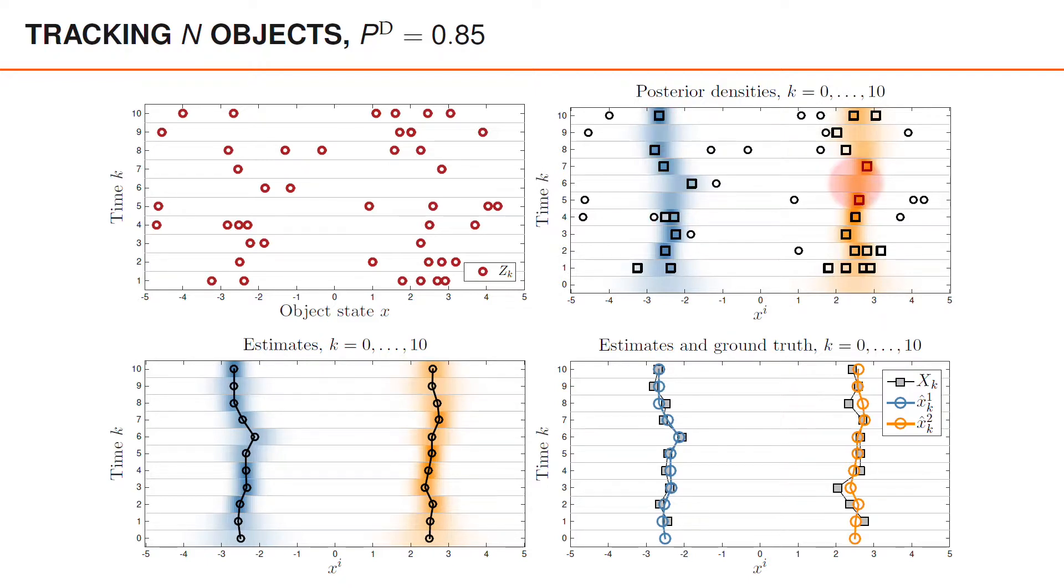In the bottom left, we show the posterior densities and estimates, again shown as black circles, and the black lines show the sequences of the estimates. A comparison between the estimates and the ground truth is given in the bottom right. As expected, the estimates are not perfect, again due to the measurement noise and the process noise, but the results are quite good.